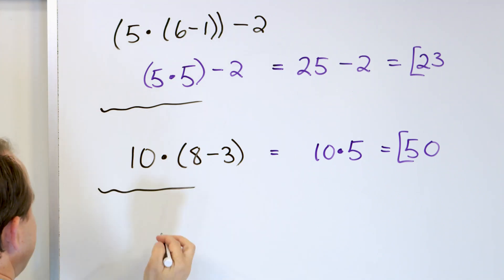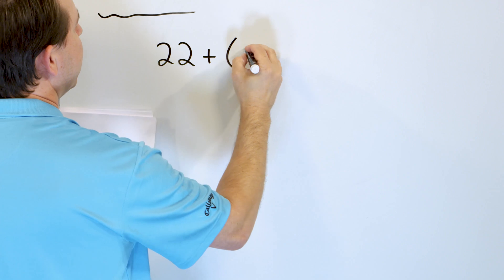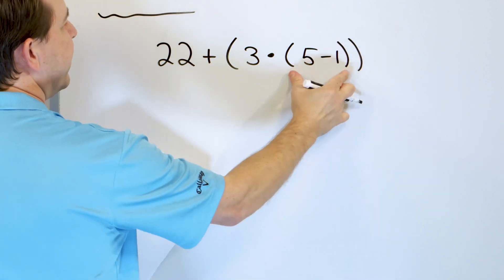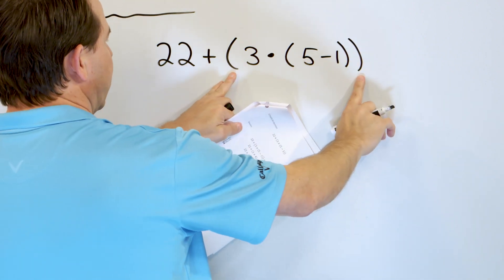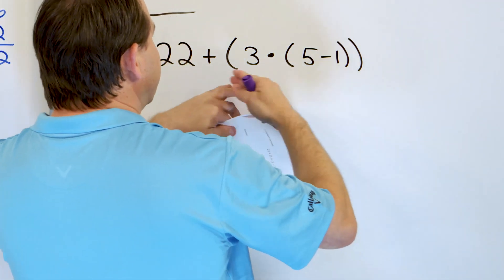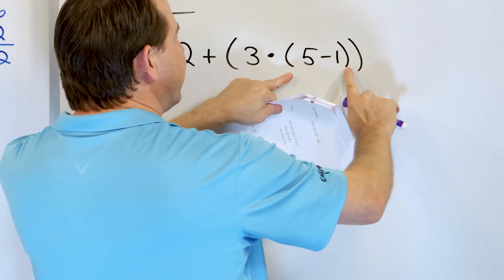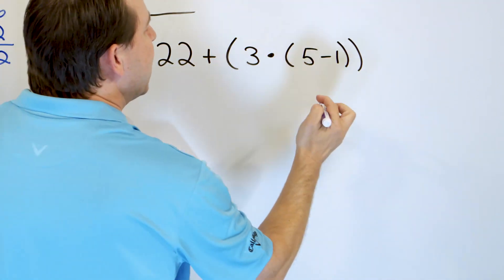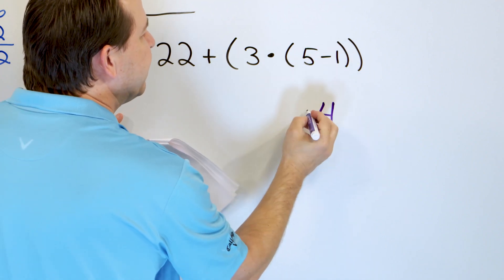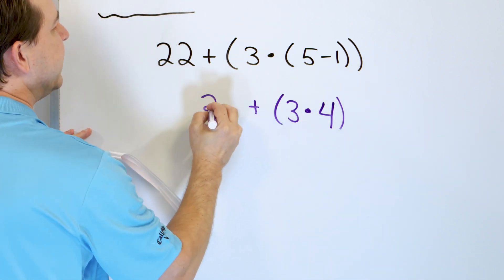Let's take a look at a bigger problem: 22, and we'll add to that, open parentheses, 3 times, open another set of parentheses, 5 minus 1, close, close. We have to do the innermost parentheses first. We must do what's inside the outer set, but what is inside is yet another set of parentheses, so we do 5 minus 1 first, which is 4. I can drop those parentheses but I still have to do the multiplication by 3, and I still have the addition of the 22.